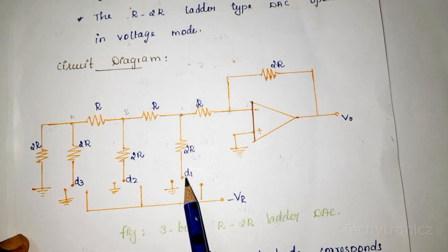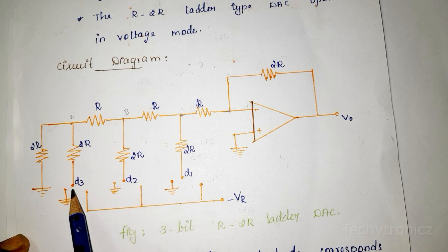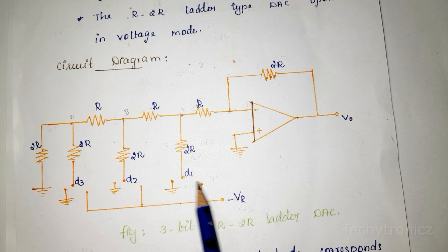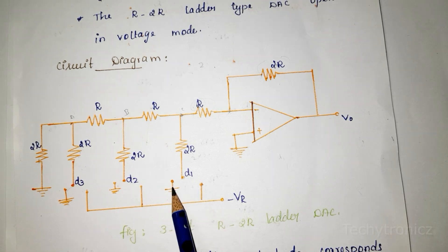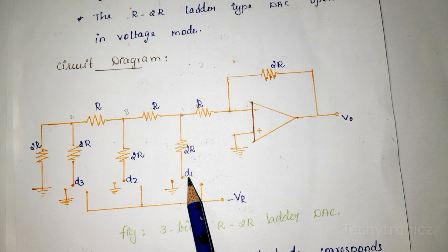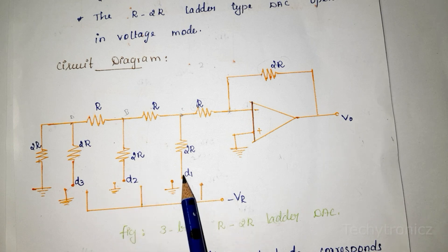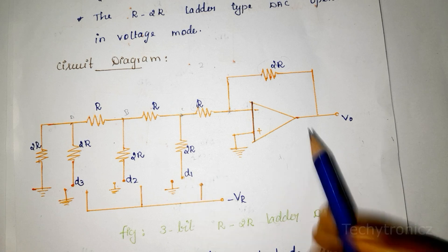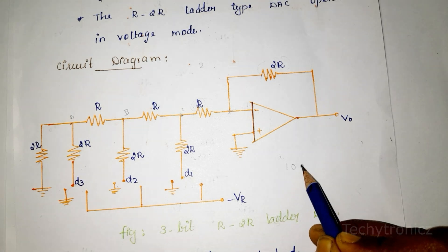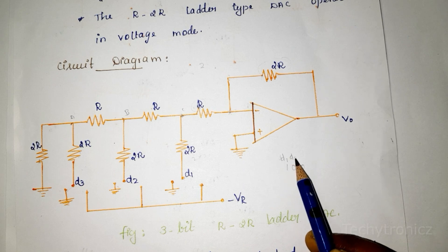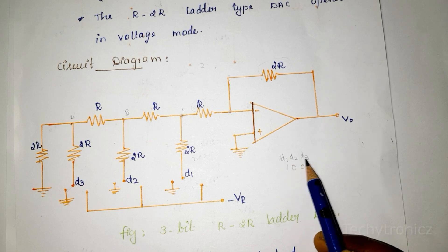Here the switches are D1, D2, and D3. Depending upon the binary word, each switch is connected to reference voltage or ground. If the binary word is 1, the switch is connected to reference voltage. If the binary word is 0, the switch is connected to ground. We are considering the switch position as 1, 0, 0 — that is, D1 value is 1, D2 value is 0, and D3 value is 0.